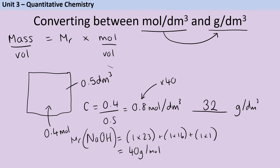To go from mol/dm³ to g/dm³ you multiply by Mr, using the mass = Mr × moles equation you already know. And if for some reason you needed to go the other way, you would divide by Mr.